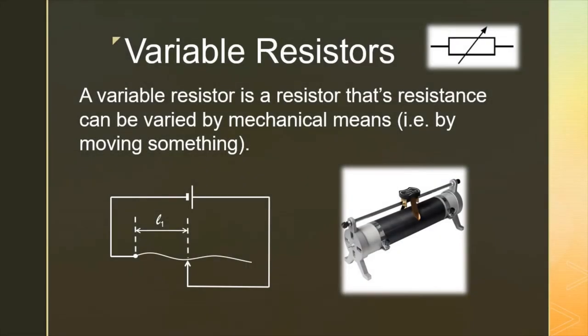I'm going to go into some of these components in a little bit more detail. The first one is a variable resistor — you can see in the top right-hand corner the circuit symbol is just a normal resistor with an arrow pointing up and to the right through it. A variable resistor is one whose resistance can be changed mechanically — generally by moving something. We've already covered how the resistance of a wire is affected by its length, so if we change the length of wire through which the current is passing, we can change the resistance. I'm going to show you a video now of a rheostat being used in this way.